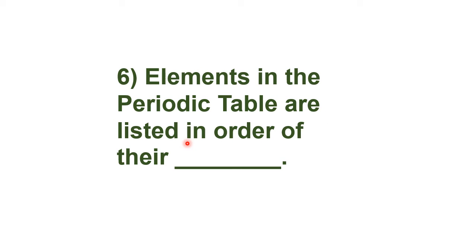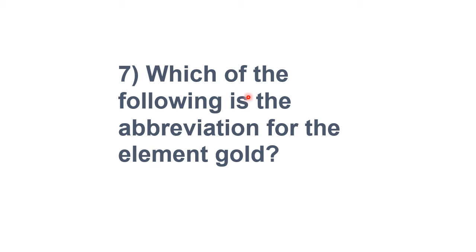Question six: Elements in the periodic table are listed in order of their dash. The answer is atomic number. The modern periodic law states that when elements are arranged in increasing order of atomic number, their properties repeat periodically — this is called periodicity. Earlier, atomic mass was used as the basis, but now atomic number is used for classification. Using atomic number, we write the electronic configuration and then study the properties of elements.